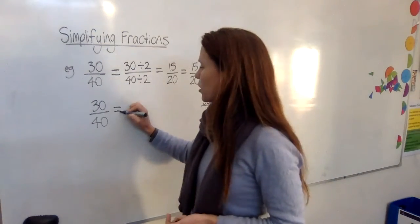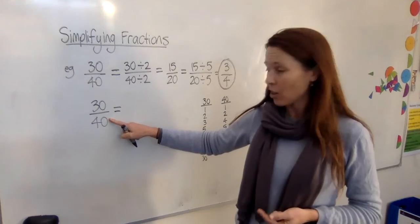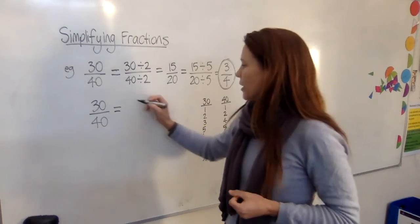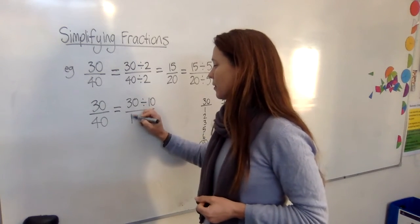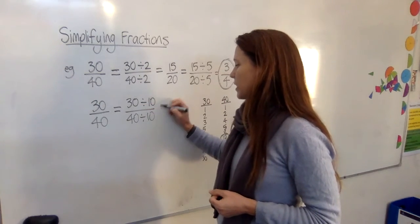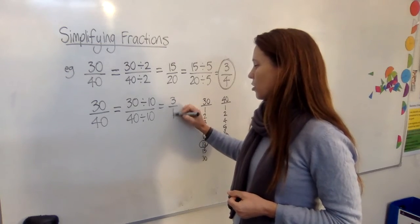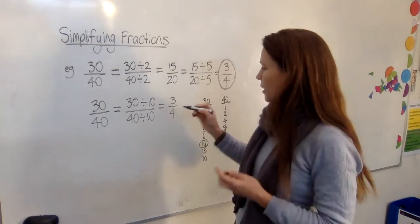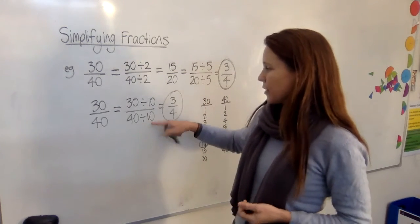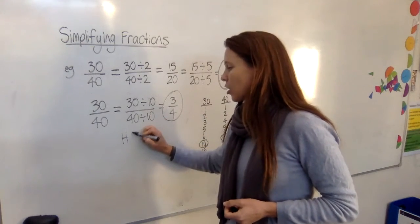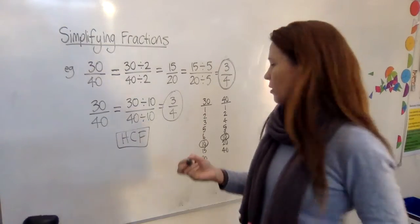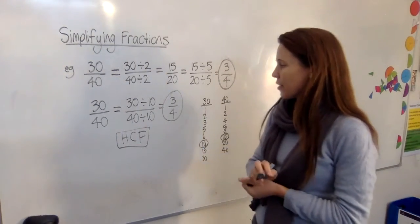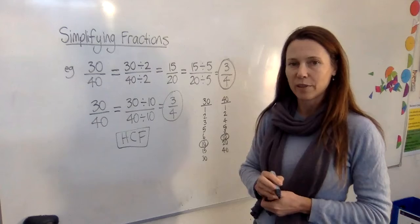So someone who can spot the biggest common factor that they share really quickly is going to be much more efficient to go straight to dividing by that. Divide by 10 and you'll get the answer straight off. So this method is great. Spot the highest common factor. And you'll see that in your textbook. Divide by the highest common factor, or the HCF. And that is the quickest way to simplify a fraction.